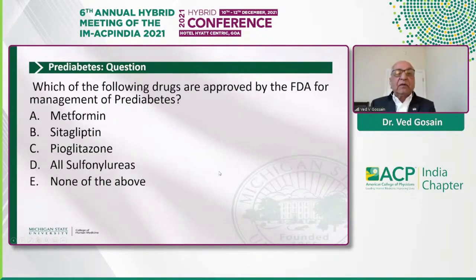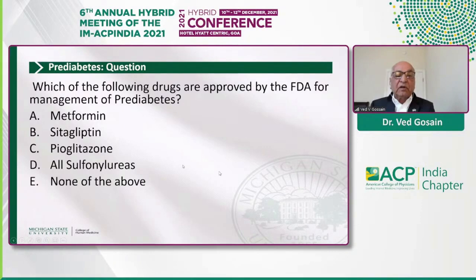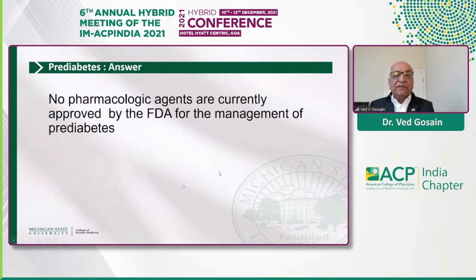Which of the following drugs are approved for management of prediabetes? Metformin, sitagliptin, pioglitazone, or none of the above? The answer is: at the present time, no pharmacological agents are currently approved by the FDA for management of prediabetes, although they can be used — but that use would be considered off-label.